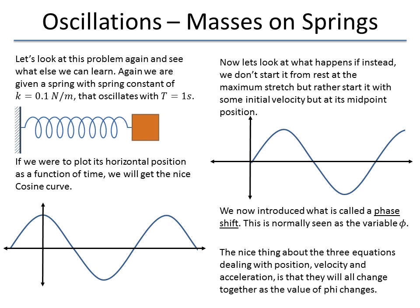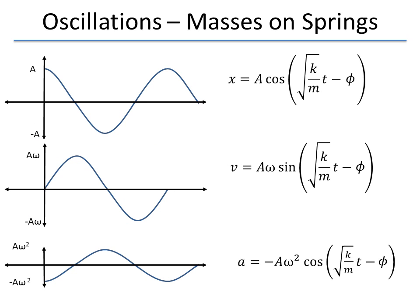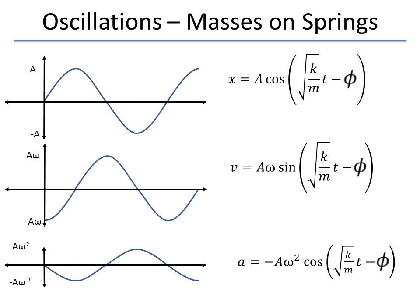This is stuff you hopefully learned in your trig class; if not, you may want to go back and brush up. Just to give you an example of what's happening: we have our three equations, and as phi changes we can watch these things shift. We have a minus phi in the equation, so as phi increases, this graph shifts to the right — the larger phi, the more it shifts. The phi measures the number of radians we shift the curve over. So a larger phi means a larger shift to the right.